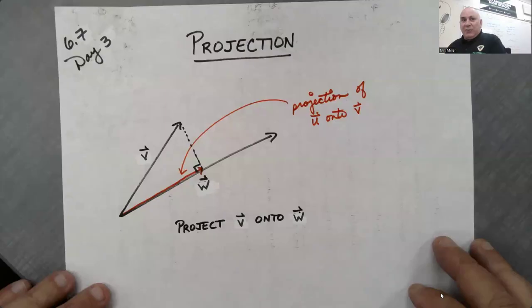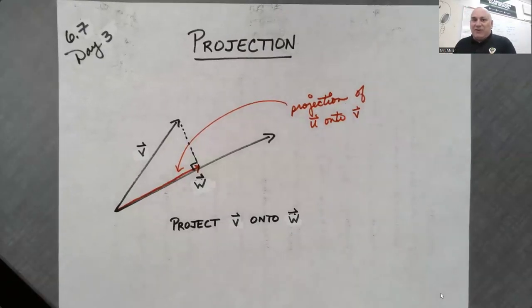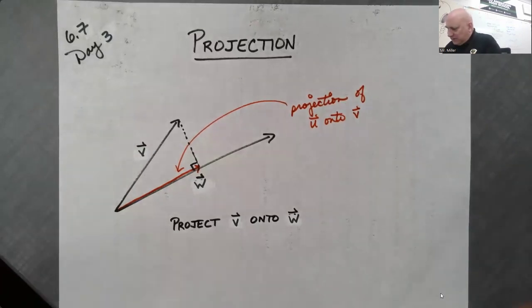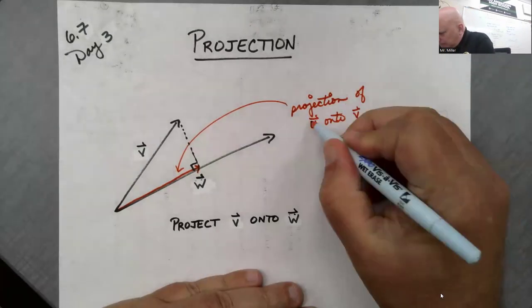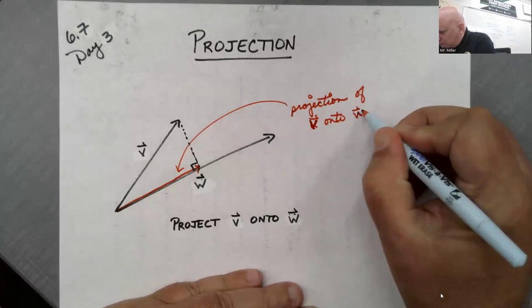That's the second lesson. Now let's do the third one — it's a bit harder. We're going to project one vector onto another. We're projecting V onto W.